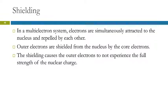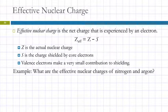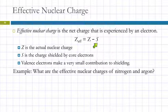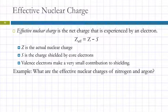In these multi-electron systems, we've got electrons simultaneously being attracted to the nucleus and repelled by other electrons. The presence of core electrons causes the valence electrons not to experience the full strength of the nuclear charge. So when we talk about effective nuclear charge, it's the atomic number minus the number of core electrons — the shielding. Valence electrons contribute very little, so we can just ignore those.